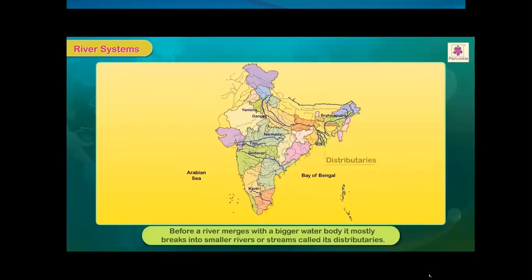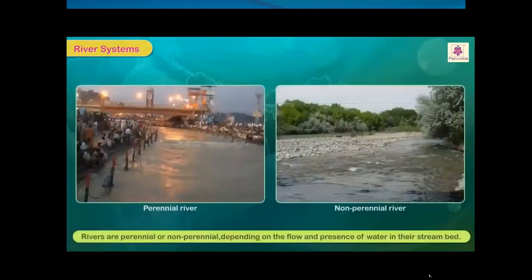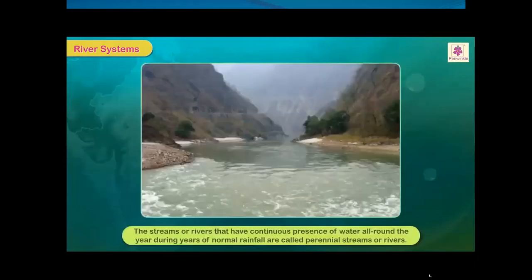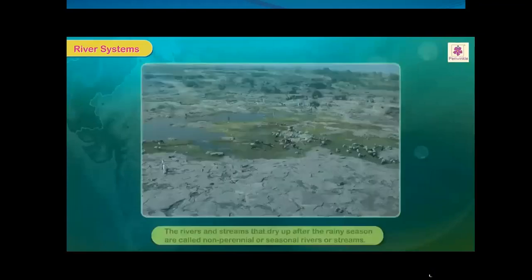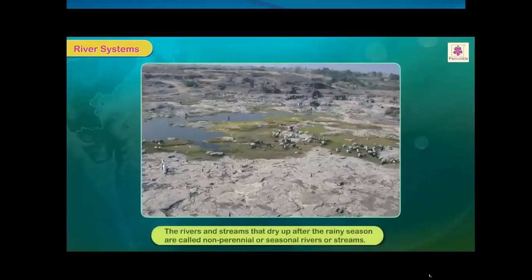Rivers are perennial or non-perennial depending on the flow and presence of water in their stream bed. Streams or rivers that have continuous presence of water all year round during years of normal rainfall are called perennial rivers. Rivers and streams that dry up after the rainy season are called non-perennial or seasonal rivers.